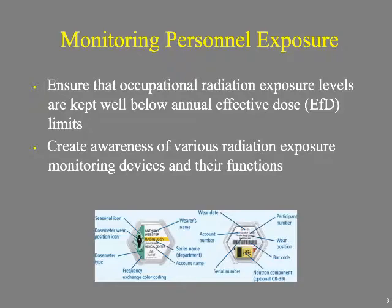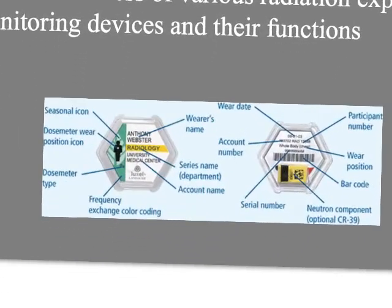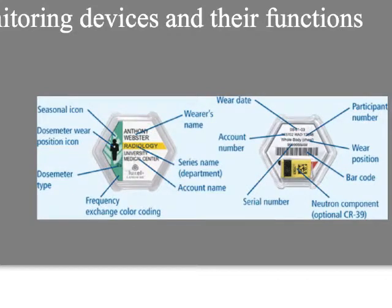Here's an illustration from Harvard Medical showing the dosimeter. The red seasonal icon on ours indicates it's fall — I honestly didn't know that until I looked at this illustration. I guess green is summer or spring.